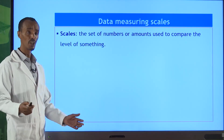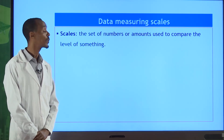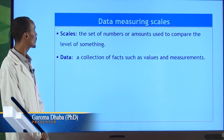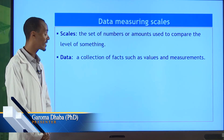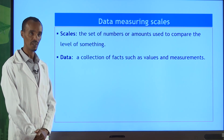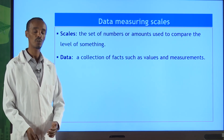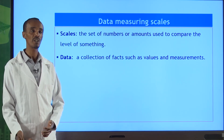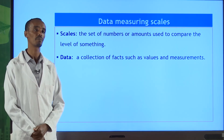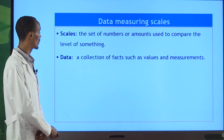What is the meaning of scale? Scales are the set of numbers or amounts which are used to compare the level of something. We also have what we call data. Data is the collection of factors such as values and measurements. As you remember, physics is the science of measurement, so when you go to the laboratory you are going to measure the magnitude or physical quantity of something, and then you record the data — that is the value of that data.